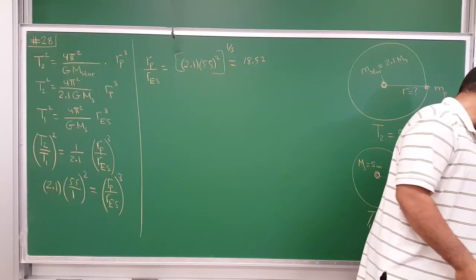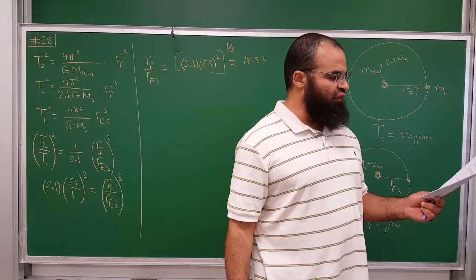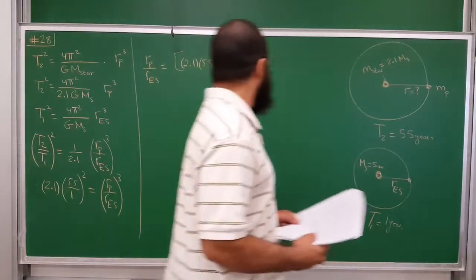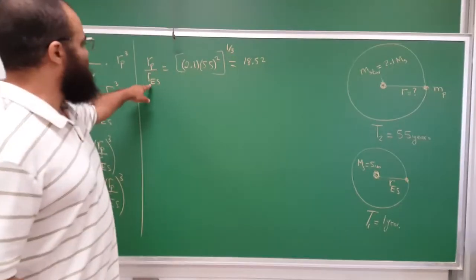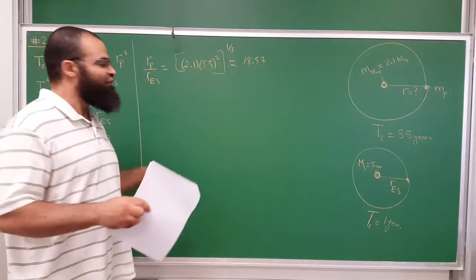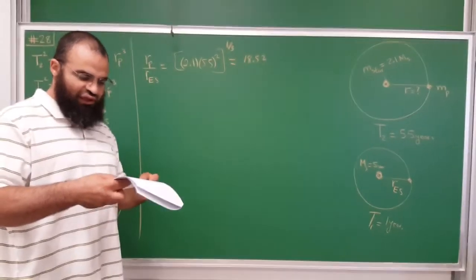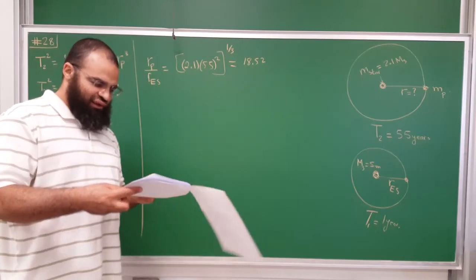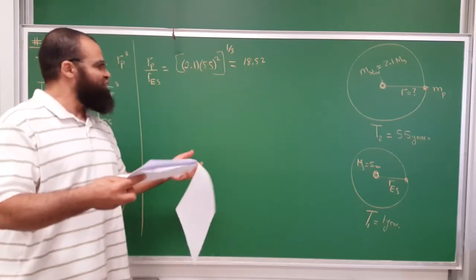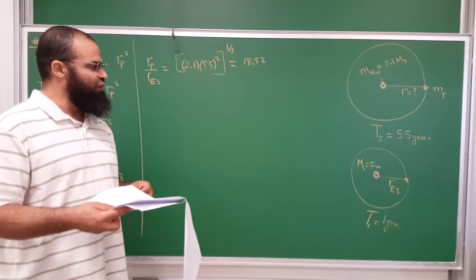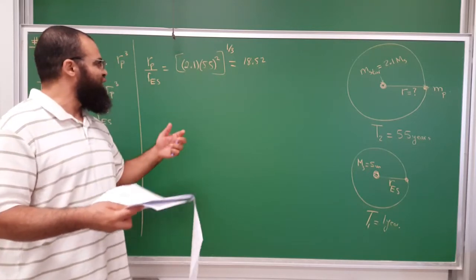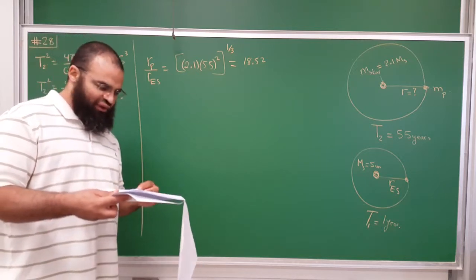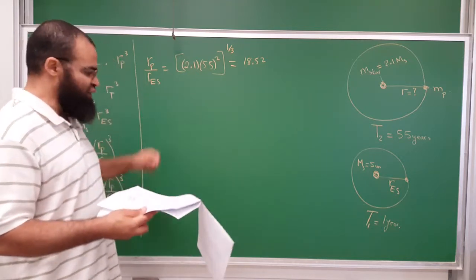The question asks for the radius as a multiple of Earth's orbital radius — the answer is 18.52. It's nice to work with symbols and ratios rather than plugging in very large numbers, because the expression itself carries more meaning.